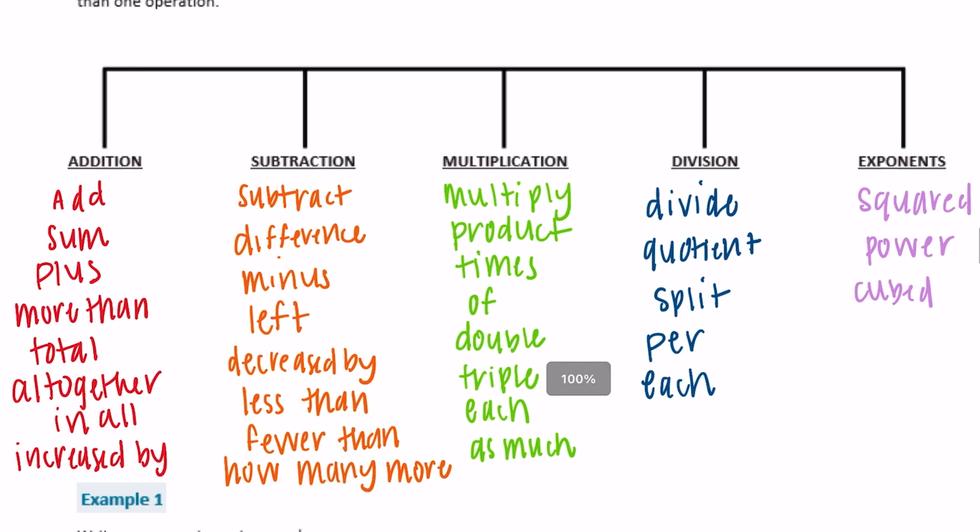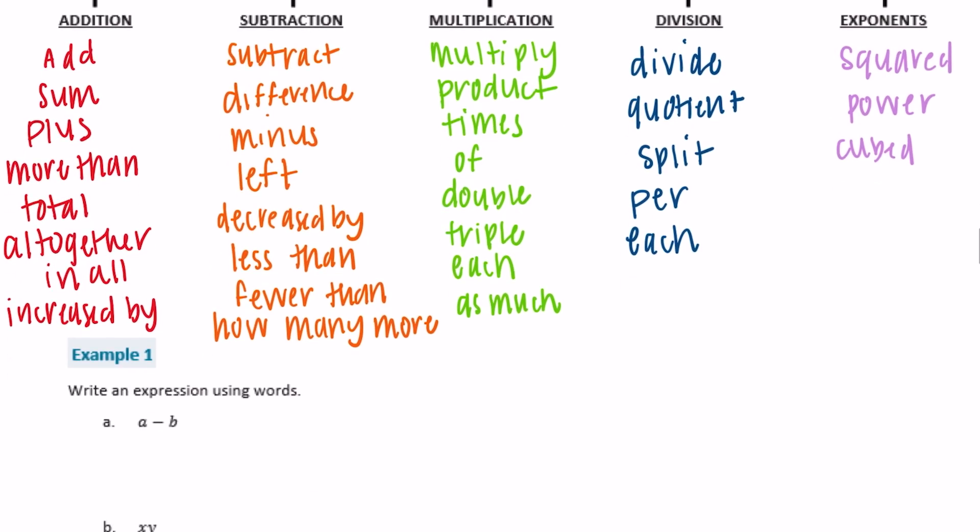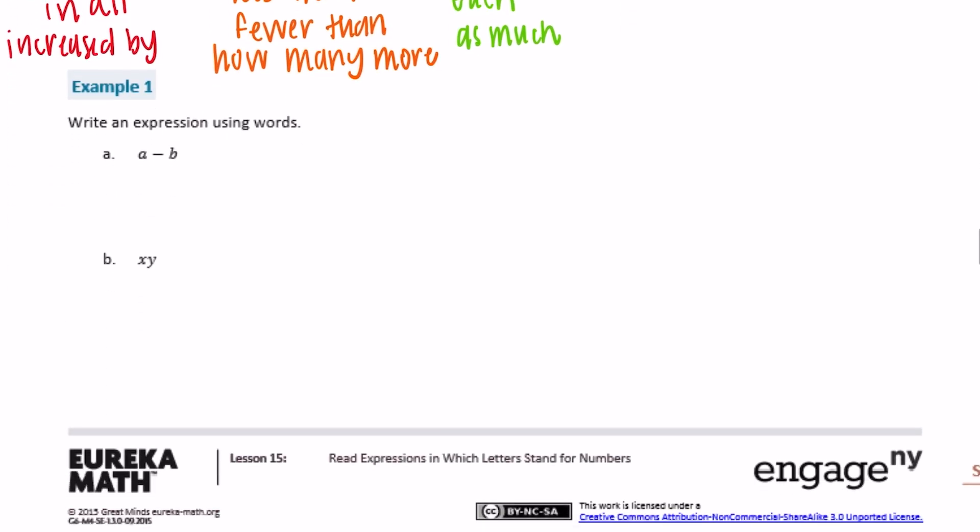Okay, so we're going to use all these words to write expressions. So it says write an expression using words. So we have a minus b, so you could write something as simple as just write out in words a minus b. So that's what I'm going to do. A minus b, or you could have written like the difference between b and a, or a decreased by b, or b subtracted from a. Any of those are right.